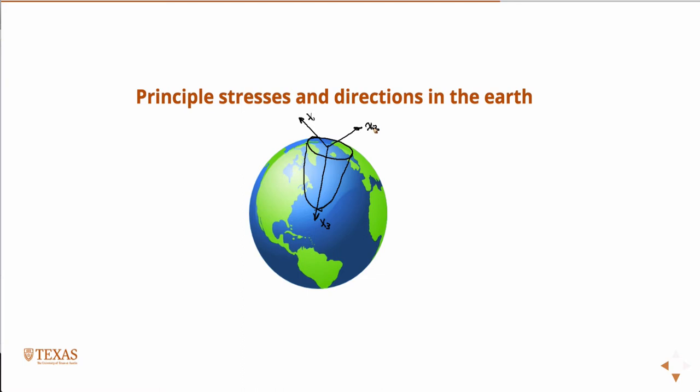And my thumb will point in the direction of x3. So x1 cross x2 gives me x3 and it goes down into the Earth, not out. And if you use your right hand, it will always work.